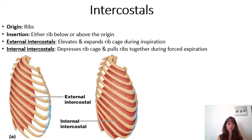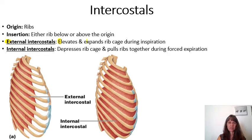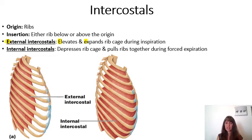The intercostals are muscles found between the ribs. The origin and insertion depend on whether they are internal or external intercostals. What's important to understand is that the external intercostals elevate and expand the rib cage during inspiration — put the E's together to remember: externals elevate, expanding the rib cage during inspiration. The internal intercostals depress the rib cage and pull the ribs together during forced expiration. Inspiration and inhalation are the same thing; exhalation and expiration are the same thing.